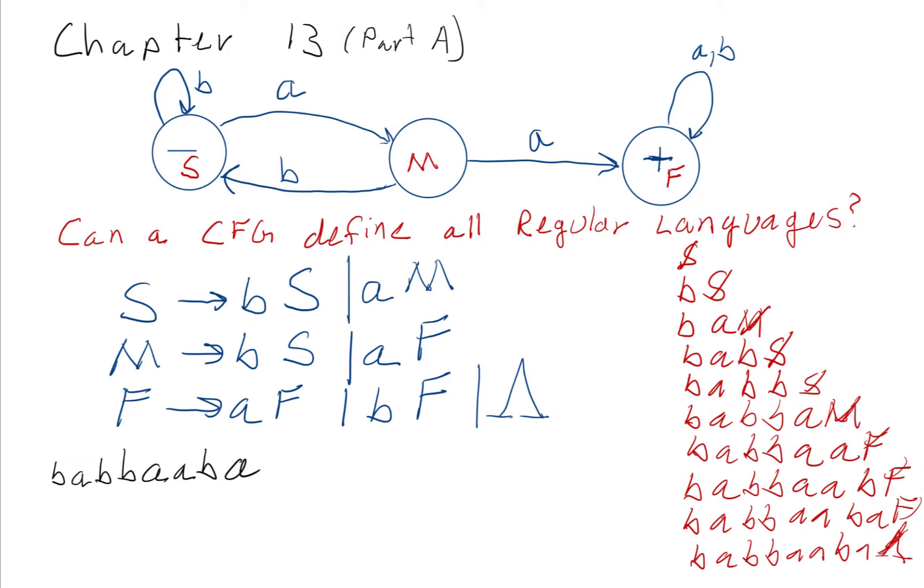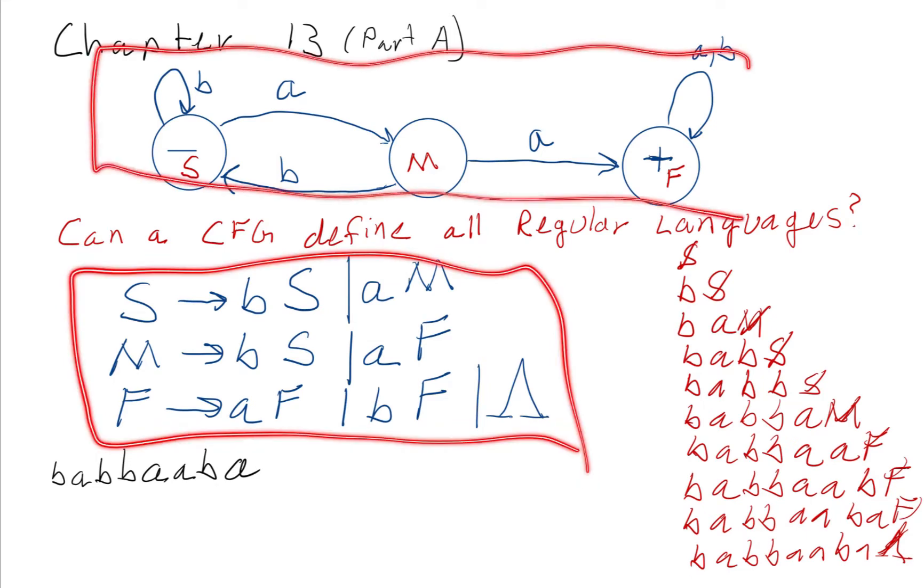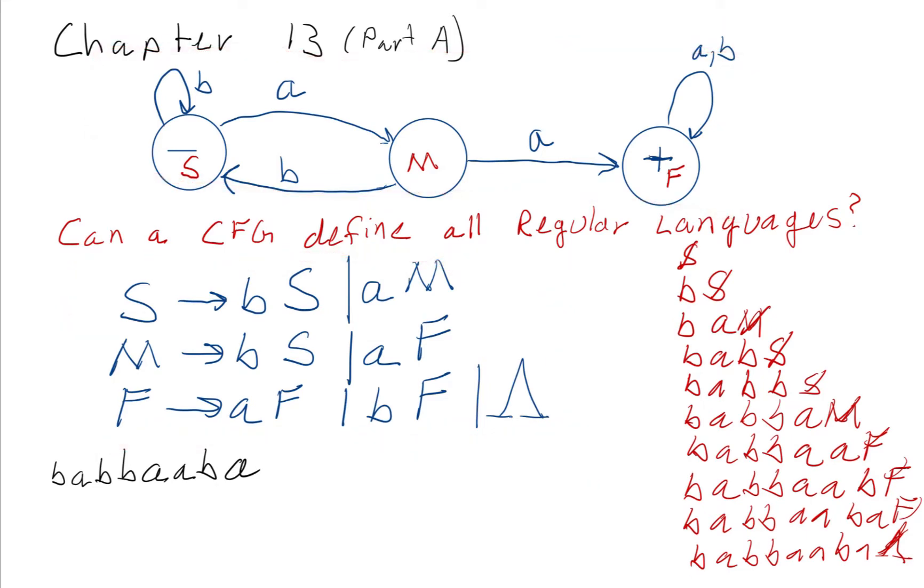Hopefully, you can see that this language right here is the same language as that. We can do this process of creating this context-free grammar by just creating one production for each edge.